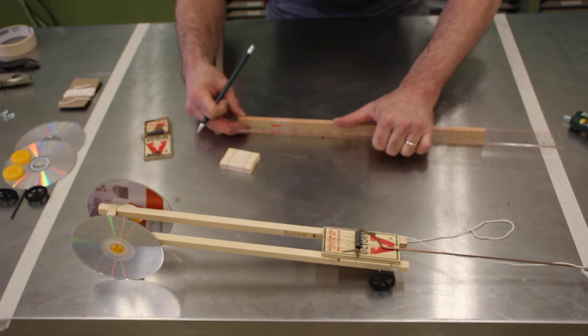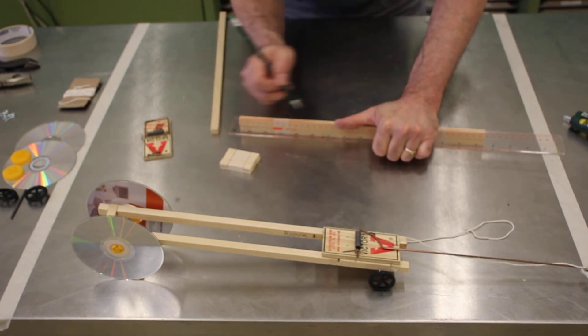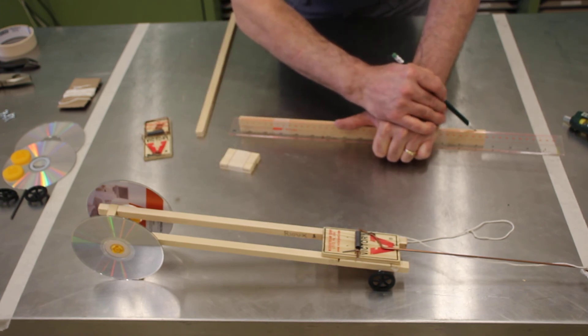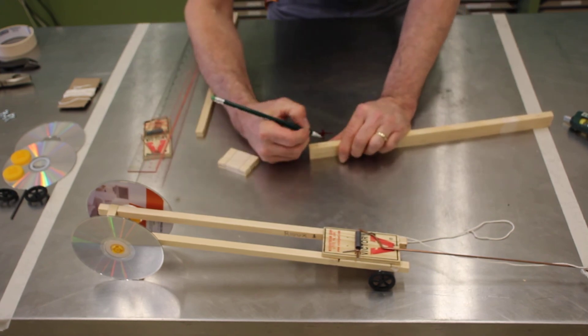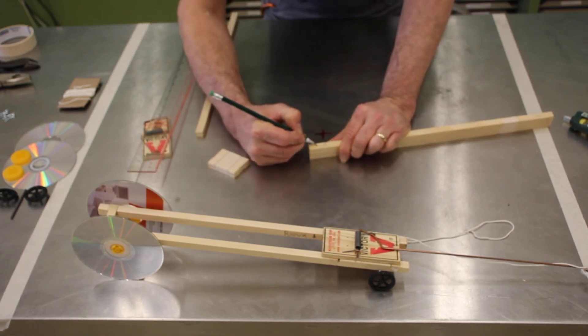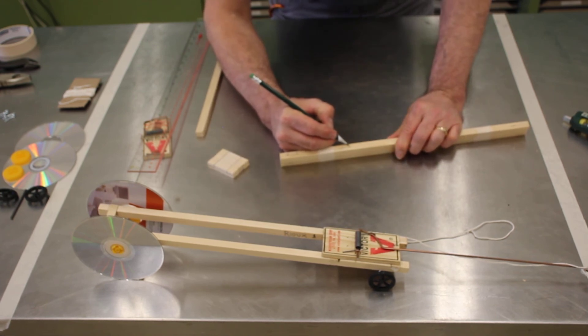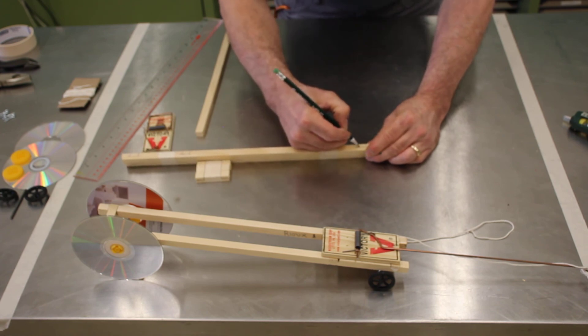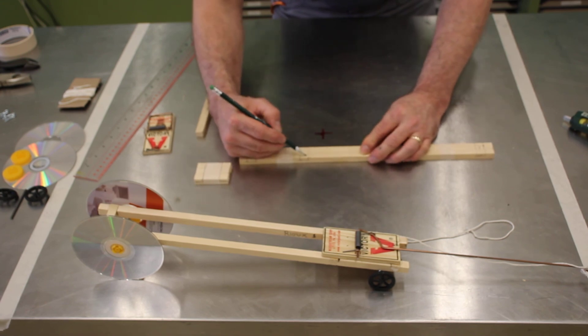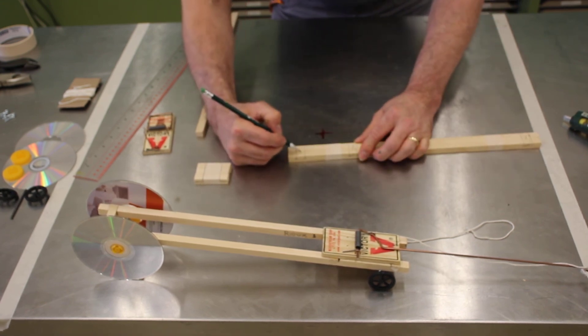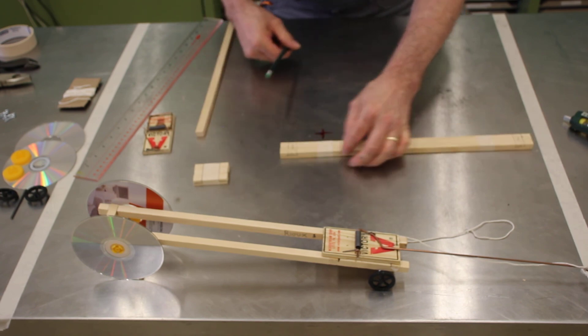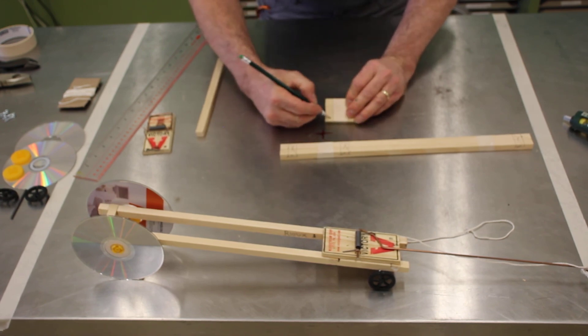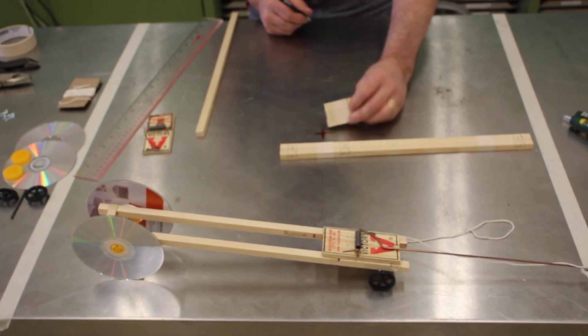We're going to take our ruler once again just to finish up those lines so we have some proper reference. Line each one up that you've done. Come across. Now we can just finish that up with our pencil and close that line in. Close that line in. And we'll close this line in. We are going to be going over to the scroll saw and we're going to remove this material. All this material I'm marking we will be removing. One moment we'll take it over to the scroll saw.